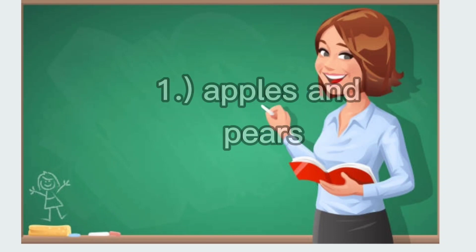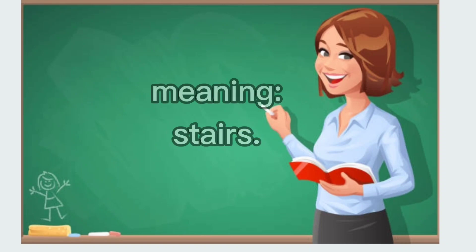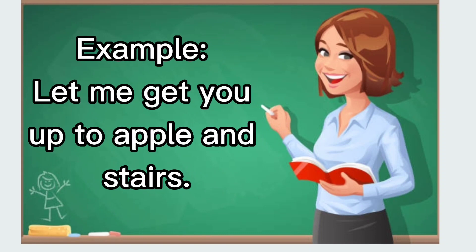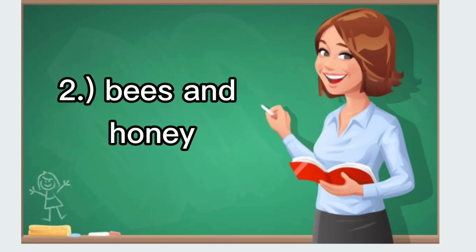One: apples and pears, meaning stairs. Example: let me get you up two apple and stairs. Two: bees and honey, meaning money.